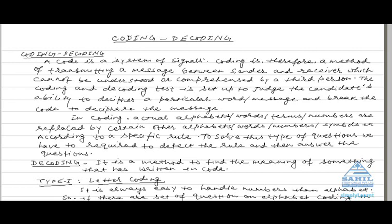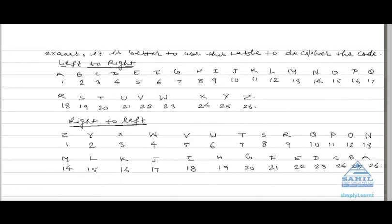Type 1: Letter code coding. It is always easy to handle numbers than alphabets, so if there are sets of questions on alphabet coding, it is better to use this table to decipher the code. First, we will write the alphabet series from left to right.